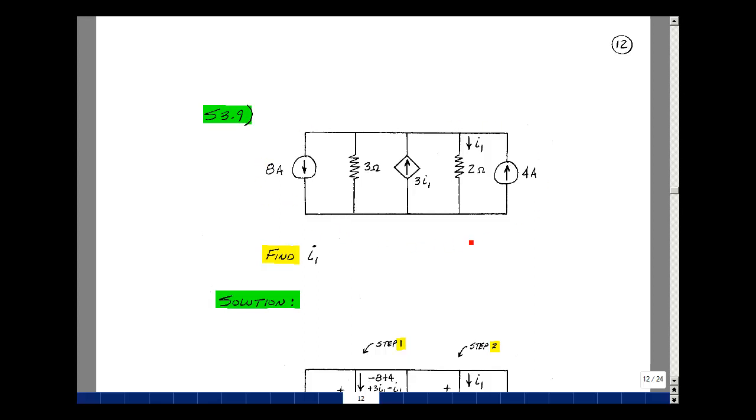Given this circuit, which has two resistors, two independent current sources, and one dependent current source dependent on this current I1, can you find the value of I1?